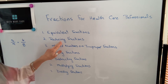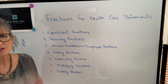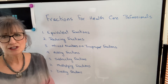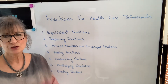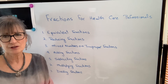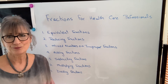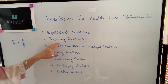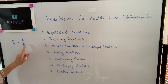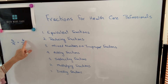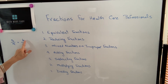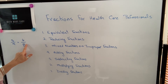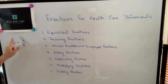The next video is on reducing fractions. Whenever you're dealing with fractions and you get a final answer, typically you want to reduce them. Reducing fractions means expressing them in their lowest terms. So if you have 6 eighths, we know that we can divide both the numerator and the denominator by 2, so it would be preferable to express it as 3 quarters.